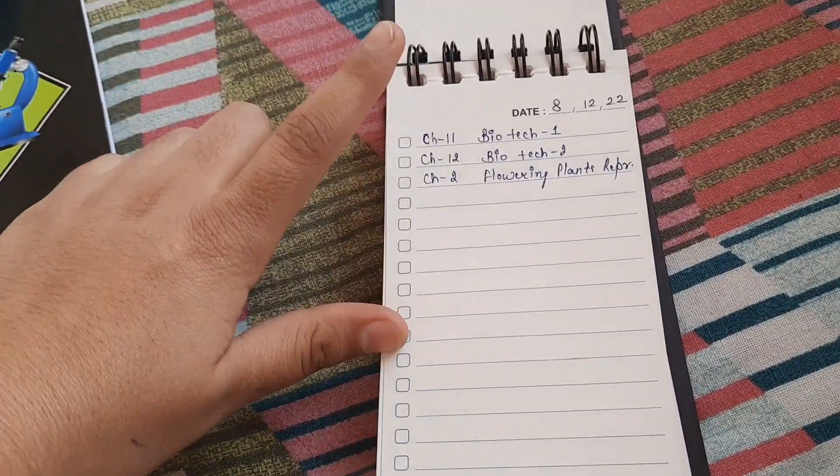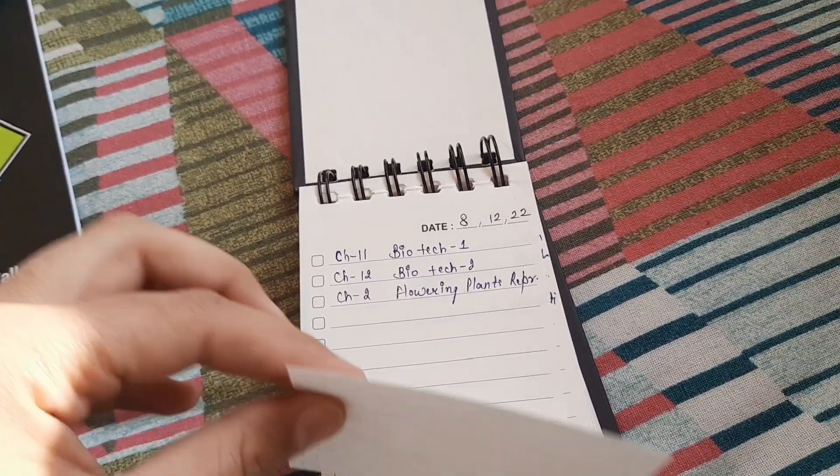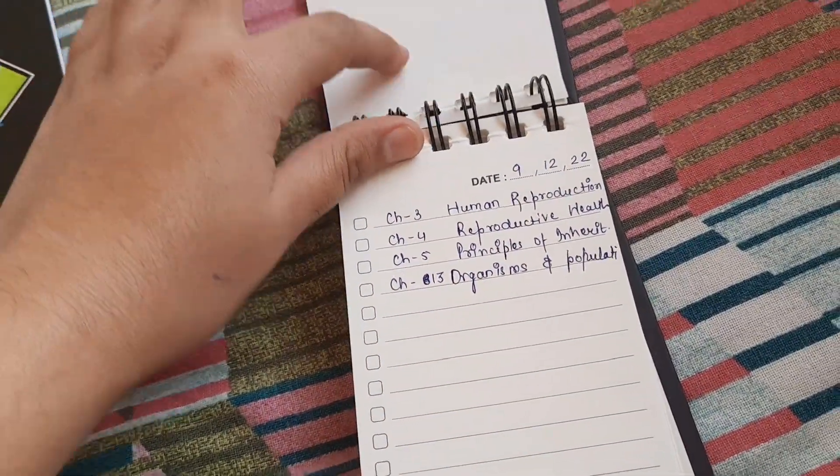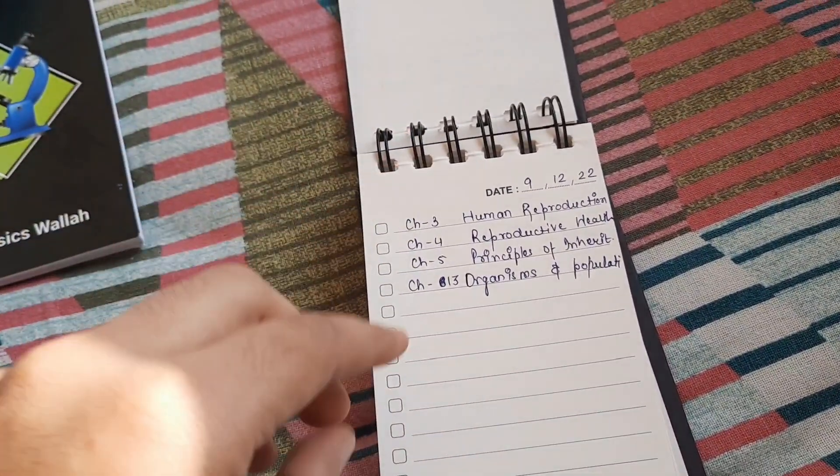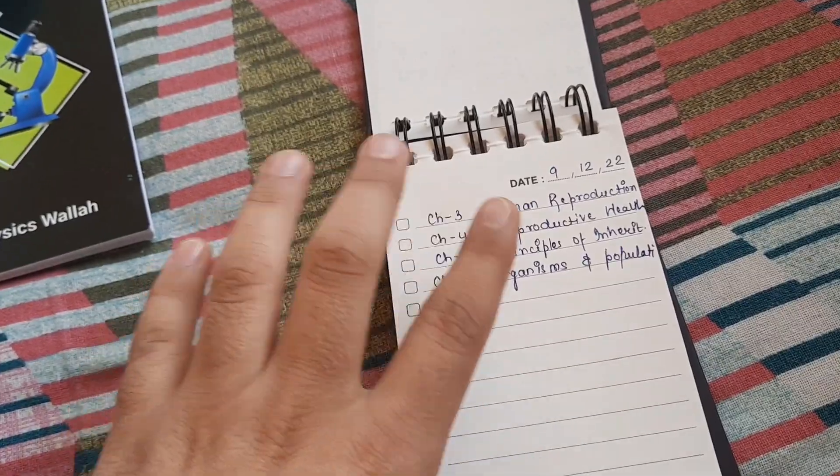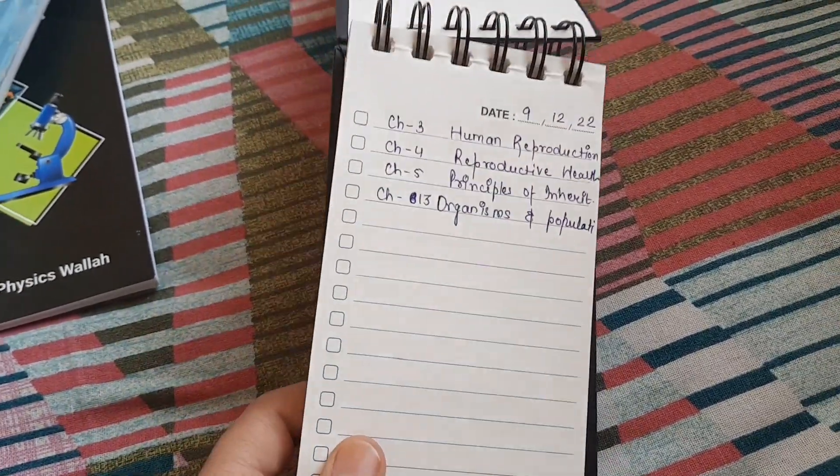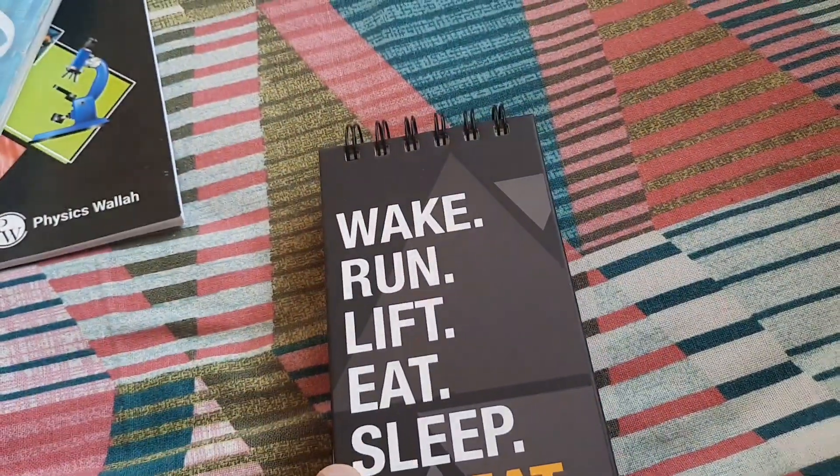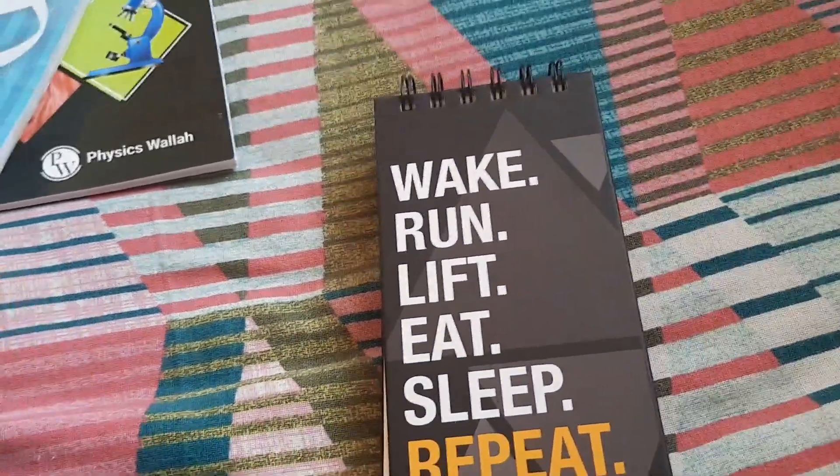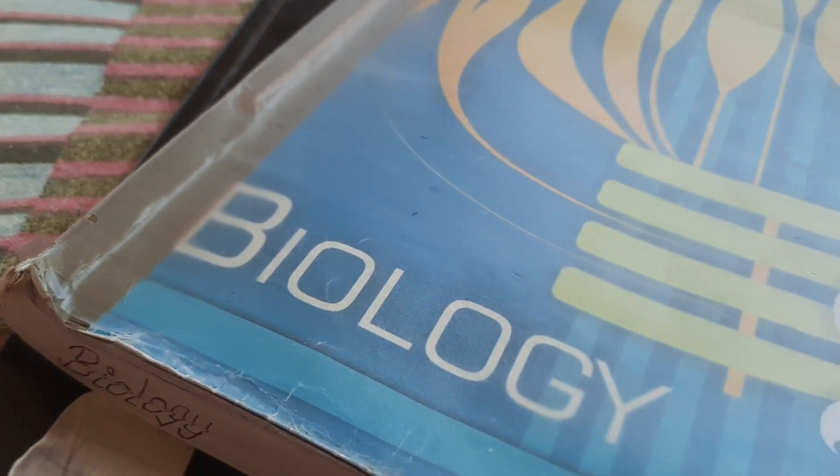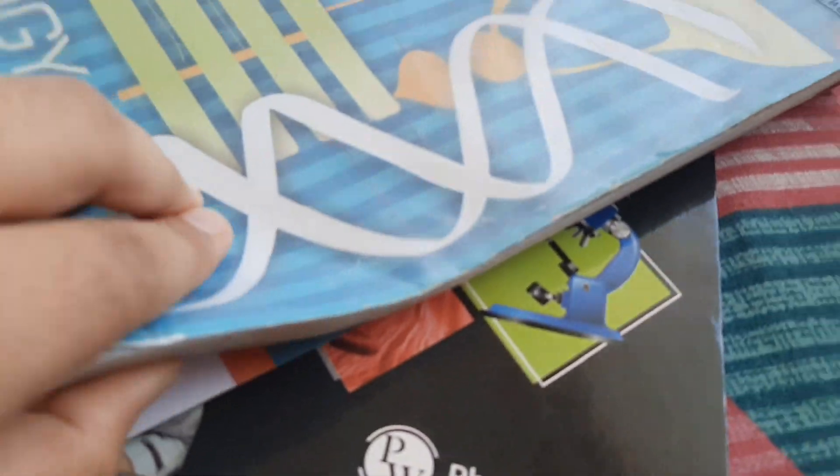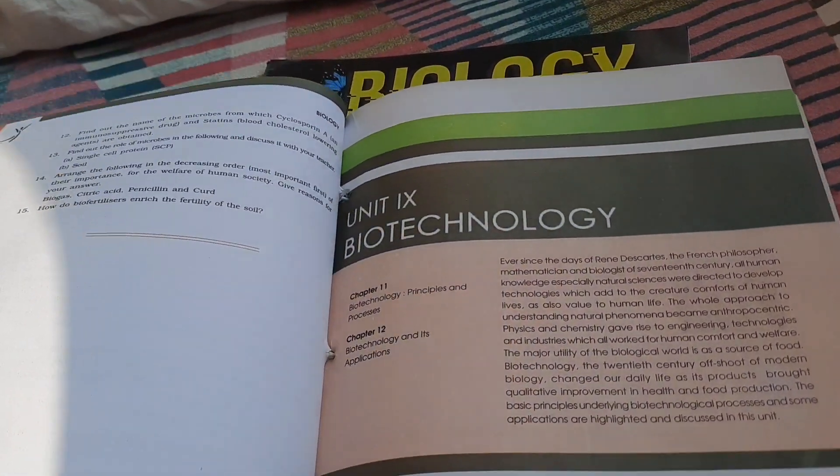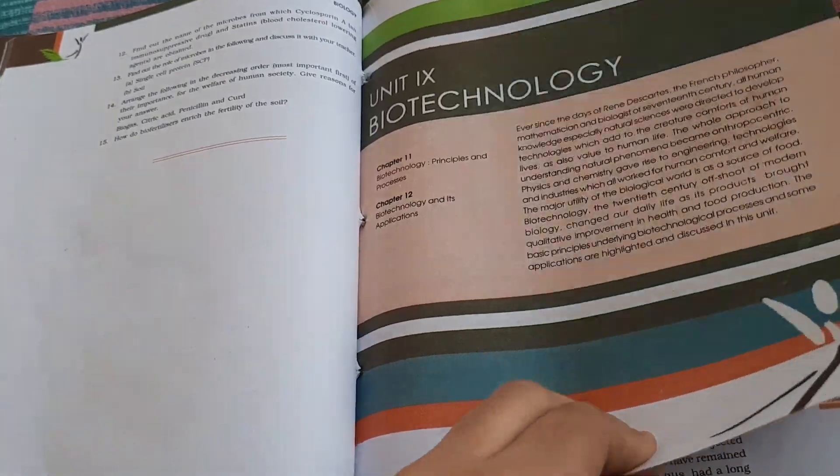Now it's around 2:45 and I have prepared my two days plan. Today I'm just assigning three chapters because half of the day has gone, and for tomorrow four chapters because my room is getting renovated. Let's start now. For now I'm doing Biotechnology - first I will complete the whole biotechnology unit and then chapter two.